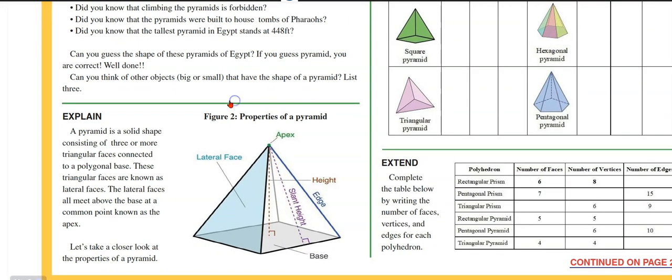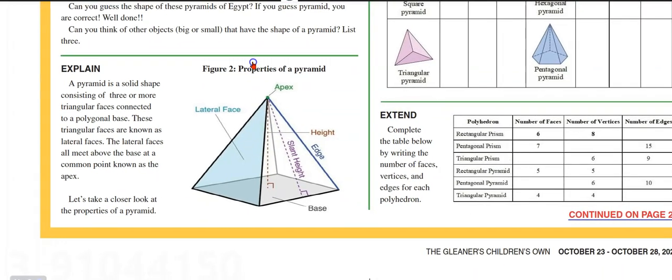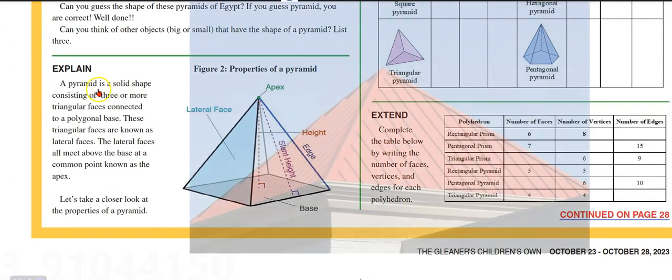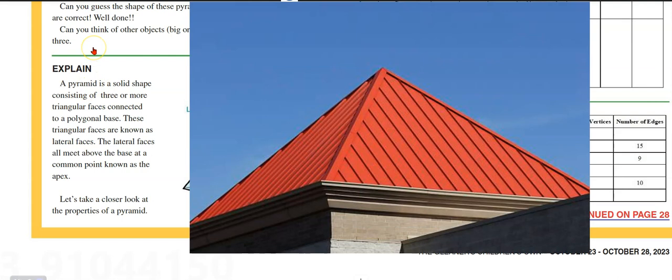Can you think of other objects, big or small, that have the shape of a pyramid? List three of them. Sometimes the roof of certain sections of houses might have that shape as well.